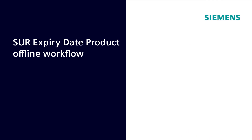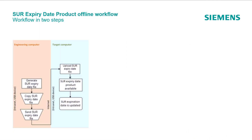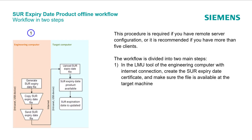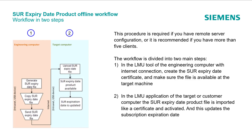SUOR expiry date product offline workflow. This workflow is also divided into two main steps, but it requires more steps on the computers because the update is done by a product file similar to a certificate. The process with this file format needs more work steps. This procedure is required if you have a remote server configuration, or it is recommended if you have more than five clients. Step 1: in the LMU tool of the engineering computer with internet connection, create the SUOR expiry date product file and make sure it is available at the target machine. Step 2: in the LMU application of the target or customer computer, the SUOR expiry date product file is imported like a certificate and activated, and this updates the subscription expiration date.